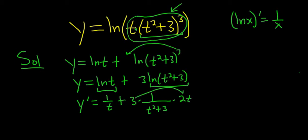The last thing to do is multiply the 3 and the 2t. So you get y prime equals 1 over t plus 6t over t squared plus 3.